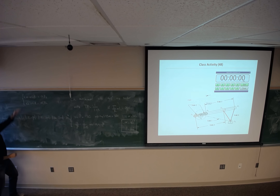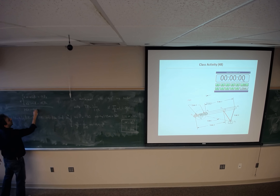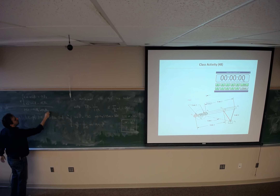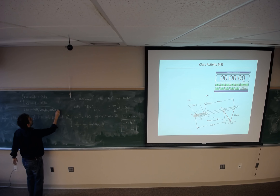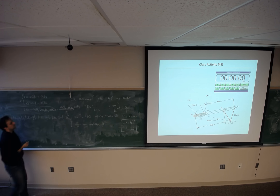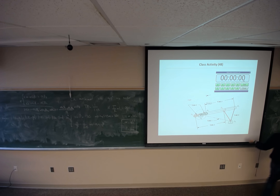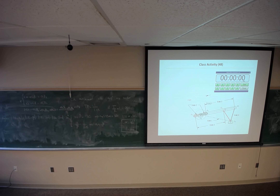Solving these two equations: adding them gives 2·coupler = O2B1 + O2B2, so coupler = (O2B1 + O2B2) / 2. You can measure these two distances, divide by two to get the coupler length, and then subtract to get the crank length. Just locate A1 based on the crank length, and then you have your mechanism: O2, A1, B1, O4.